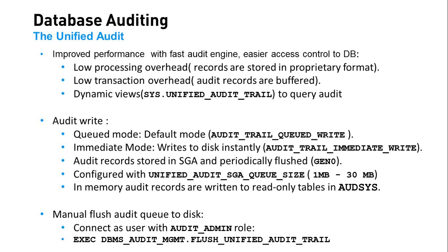Apart from that, if you want to flush the audit records from the queues directly to disk into the AUD_SYS tables, you can use the flush unified audit trail command from the DBMS_AUDIT_MGMT package. The person executing this package should have the AUDIT_ADMIN role. This concludes the overview of Oracle Unified Auditing.